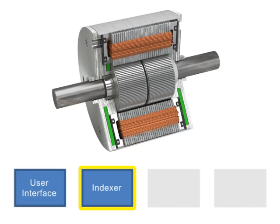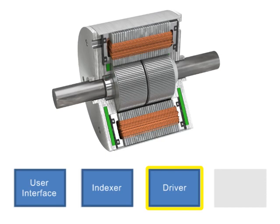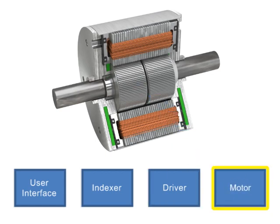The indexer converts the data input from the user interface to motion signals that the motor will turn to a defined position and speed. The driver then takes the data from the indexer and provides current pulses to the motor. The number of steps the motor turns is equal to the number of pulses transmitted to the driver. The stepper motor is a brushless electric motor that converts pulses into mechanical shaft rotation, with each pulse moving the shaft through a fixed angle defined by multiple-toothed electromagnets arranged around a gear-shaped rotor.